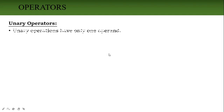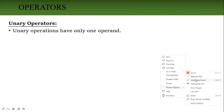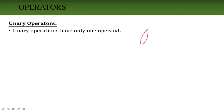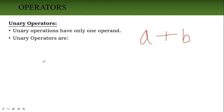Unary operator — unary means single. This operator contains only one operand. For example, in the expression 'a + b', plus is the operator and a and b are operands. In a unary operator, only one operand is there. The unary operators are: not (!), negation, star (*), plus (+), plus plus (++), minus (--). These are the unary operators.